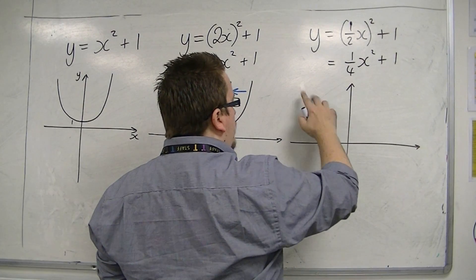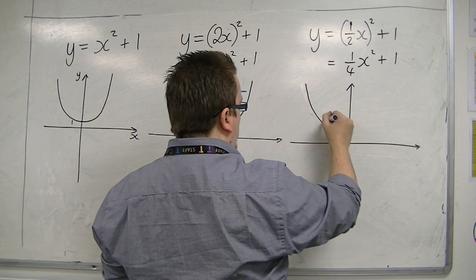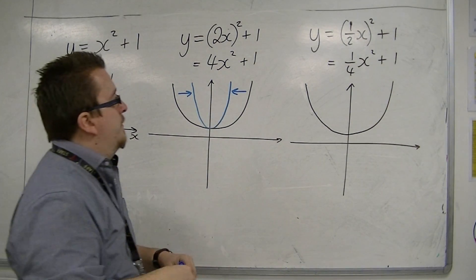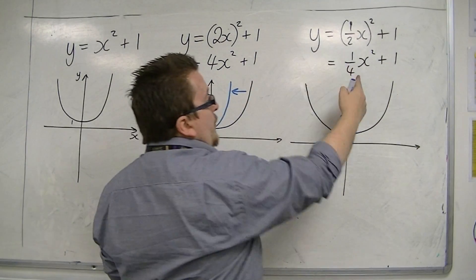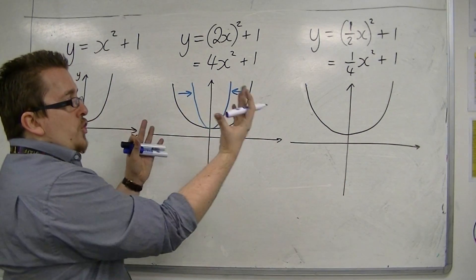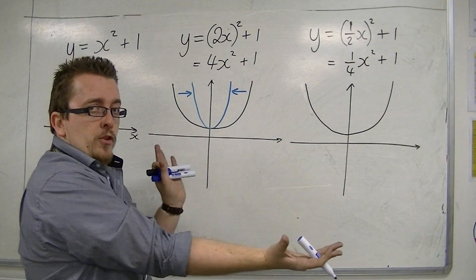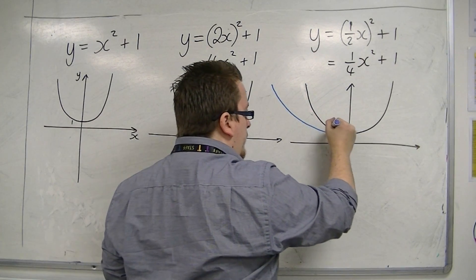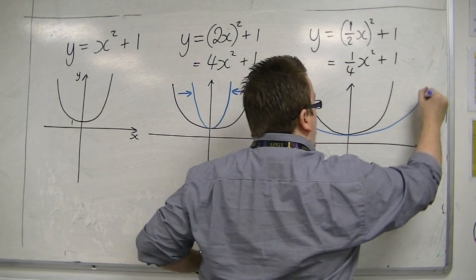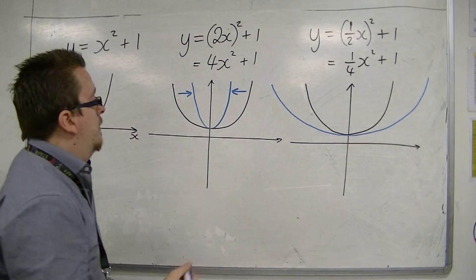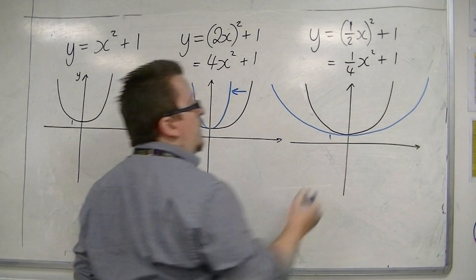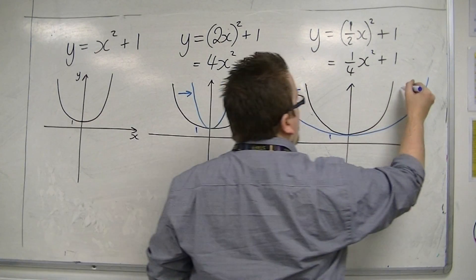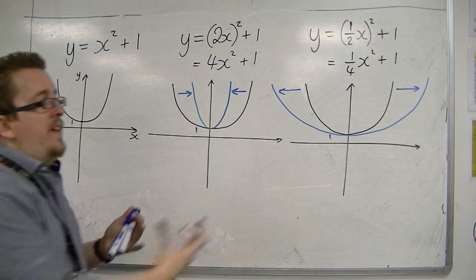If now I try and sketch this, I'm going to sketch the original. Then a quarter x-squared plus 1 has actually opened the graph up. It will look something like this. It will still go through 1, as that graph did, on the y-axis.